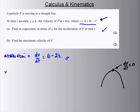So max velocity is simply when 6 minus 2t, the gradient, the acceleration, equals 0. 2t equals 6, t equals 3.